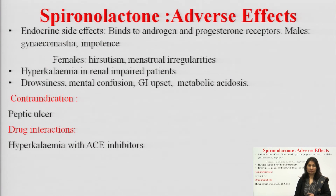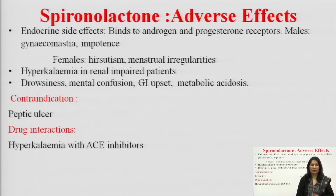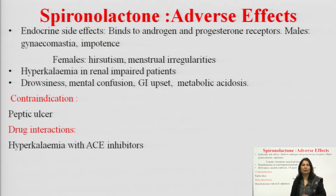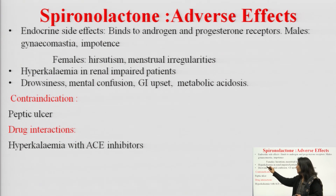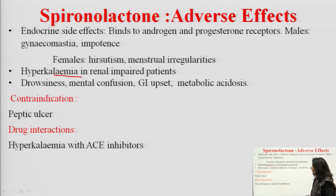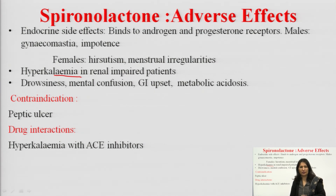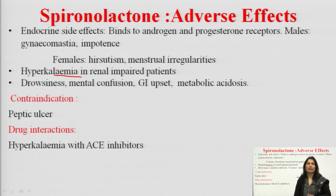Adverse effects of spironolactone: it has endocrine side effects because it is a steroid — it binds to androgen and progesterone receptors. In males it causes gynecomastia and impotence; in females it causes hirsutism and menstrual irregularities. It causes hyperkalemia in renally impaired patients because it conserves potassium. Other effects include drowsiness, mental confusion, GI upset, and metabolic acidosis. It is contraindicated in peptic ulcer and should not be used with ACE inhibitors due to risk of hyperkalemia.